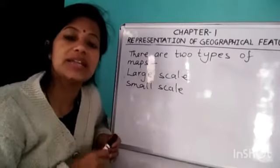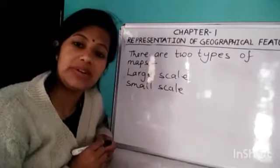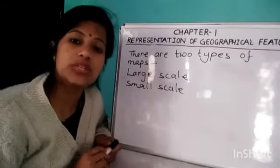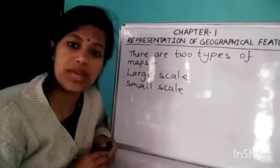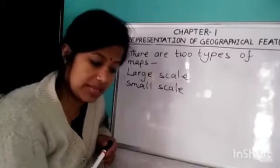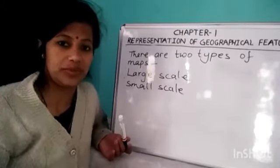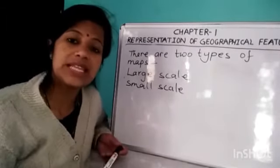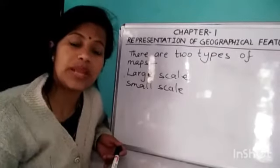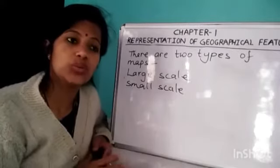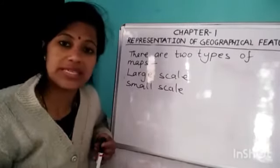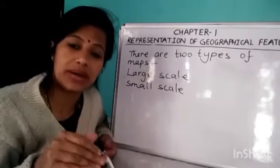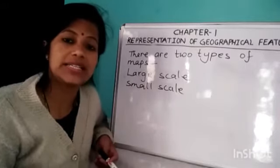Topographical maps are large-scale maps. Different types of symbols, signs, and colors are used to understand the map. Colors tell a different story, and symbols and signs are used as well. Scale plays an important role in reading a map. Scale is a ratio between the distance on the map and the distance on the ground.